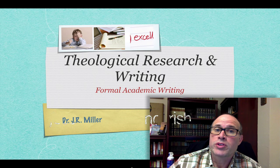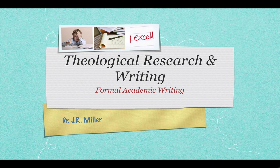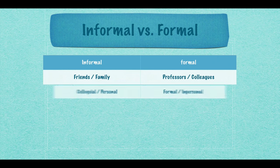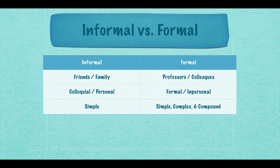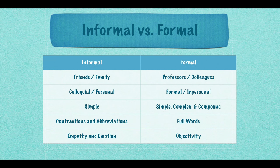Hello, and welcome back to our series on research and writing. This is part two of two on formal academic writing. In part one, we covered the areas of audience and formal writing to professors and colleagues, tips on the formal and impersonal style of writing, and important keys to sentence structure — simple, complex, and compound sentences. Now we're going to cover the next two areas: full words and objectivity, and we'll close with some rules for writing with clarity.